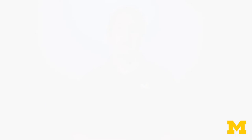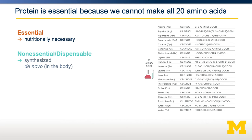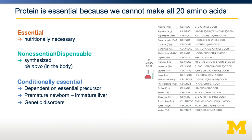Protein is an essential nutrient because we cannot make all 20 amino acids. Some amino acids must be obtained from our diet. Therefore, each amino acid can be broken down into a nutritionally essential amino acid, a nutritionally dispensable amino acid, or sometimes a conditionally essential amino acid. A conditionally essential amino acid still must be obtained from the diet, but maybe not in all people — there are some conditions which make it essential.